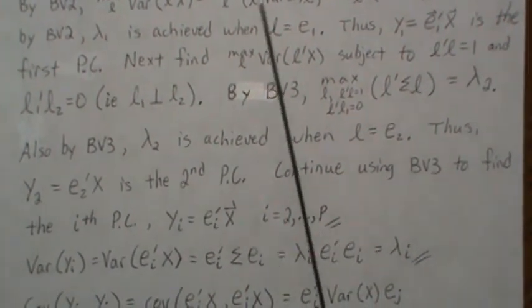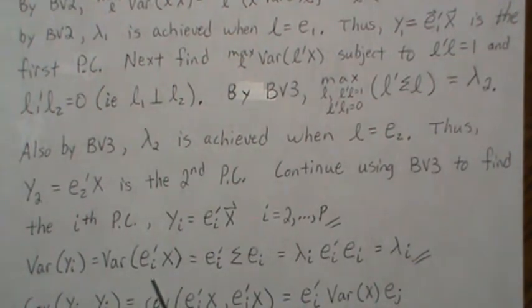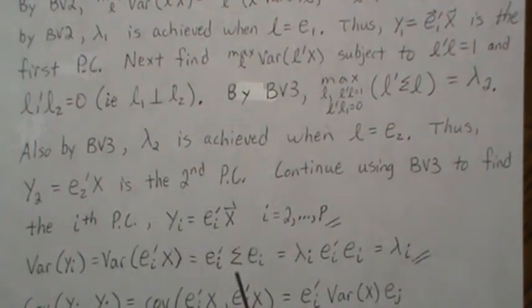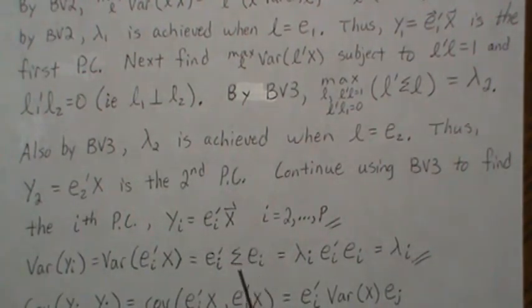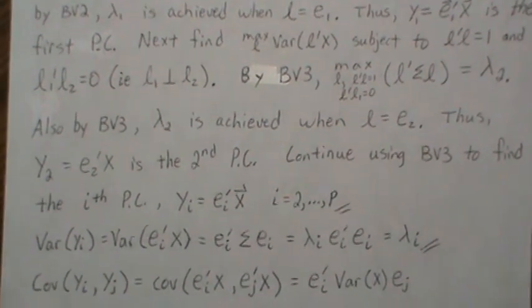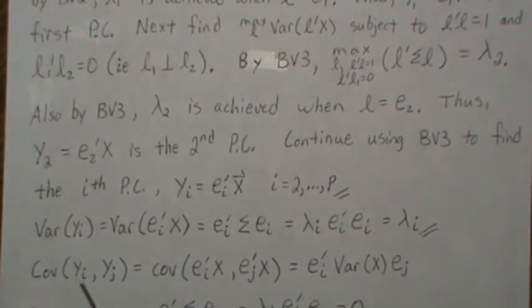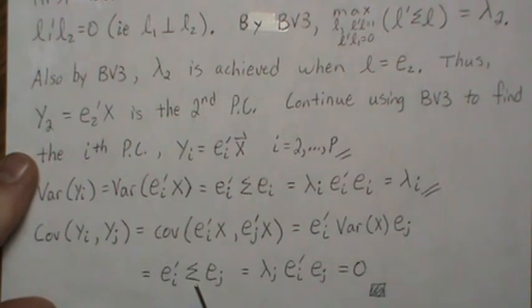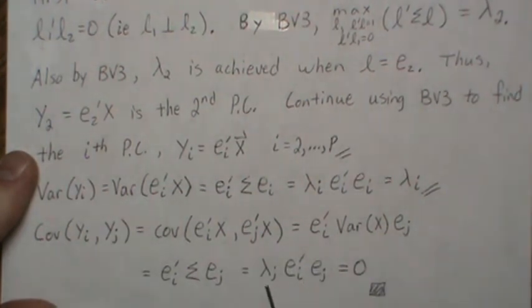Now for the second part of the theorem — the variance. The variance of Y_i equals e_i' sigma e_i. Since e_i is an eigenvector, sigma e_i = lambda_i e_i, so this becomes lambda_i times e_i'e_i. Since the eigenvector has length 1, it's just lambda_i. For the covariance between any two principal components Y_i and Y_j, we get e_i' sigma e_j = lambda_j times e_i'e_j. Since the eigenvectors are normalized and orthogonal, e_i'e_j = 0, so the covariance is zero.